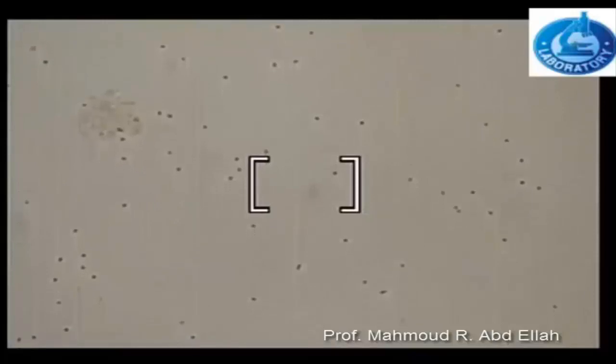Each corner of the counting area contains 16 small squares. All cells in the 16 small squares are counted.